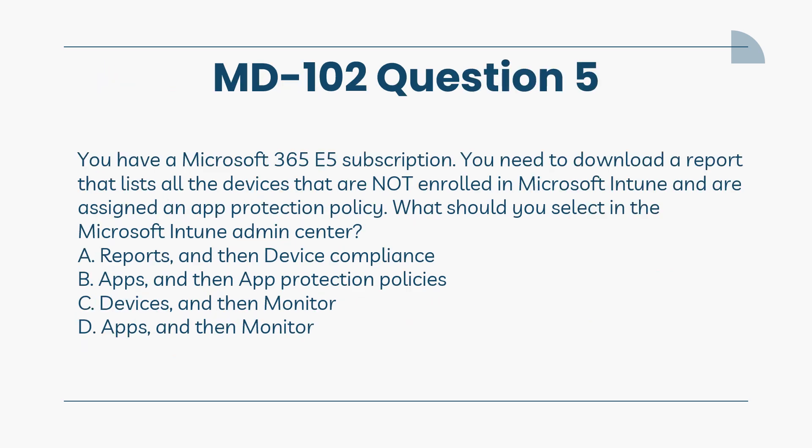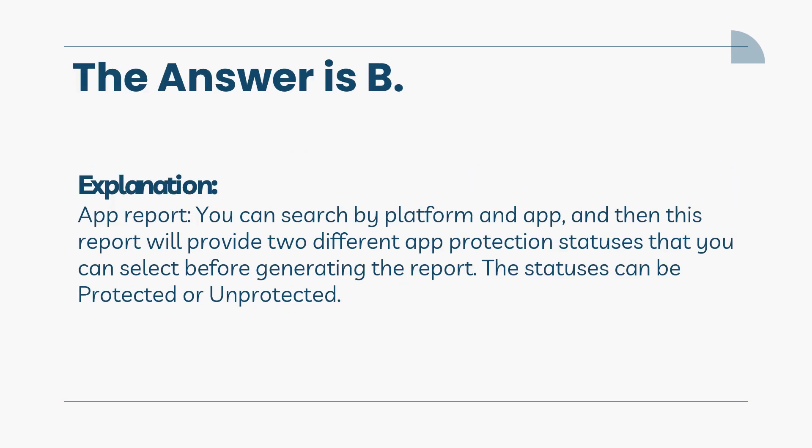You have a Microsoft 365 E5 subscription. You need to download a report that lists all the devices that are not enrolled in Microsoft Intune and are assigned an App Protection Policy. What should you select in the Microsoft Intune Admin Center? A. Reports, and then Device Compliance. B. Apps, and then App Protection Policies. C. Devices, and then Monitor. D. Apps, and then Monitor. The answer is B. You can search by platform and app, and this report will provide two different app protection statuses you can select before generating the report. The statuses can be protected or unprotected.